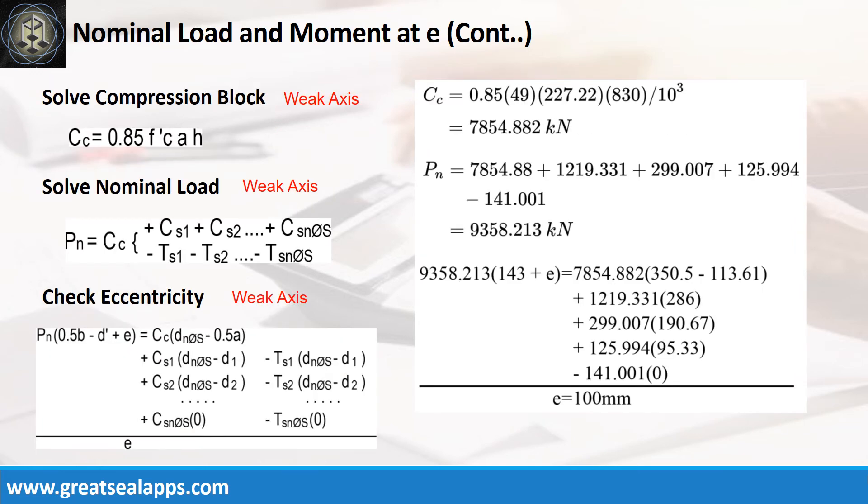Given f'c equals 49 MPa, height of stress block equals 227.22 mm and column length equals 830 mm, the force of compression block is 7854.882 kN. By summing up all the forces, the nominal axial load is 9358.213 kN.